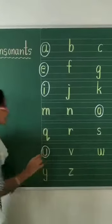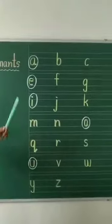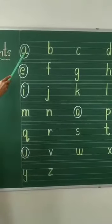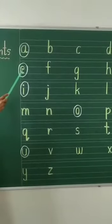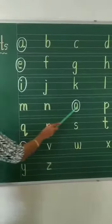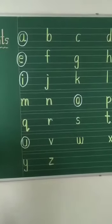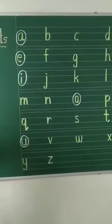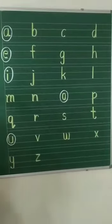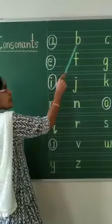In 26 letters, children, there are 5 vowels. They are A, E, I, O, and U. And the remaining letters are consonants. The remaining are consonants.